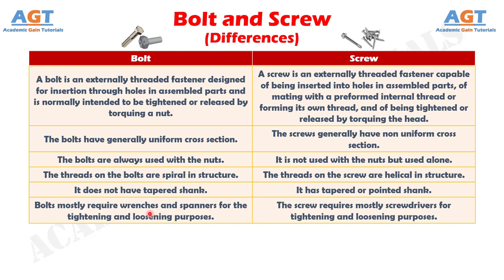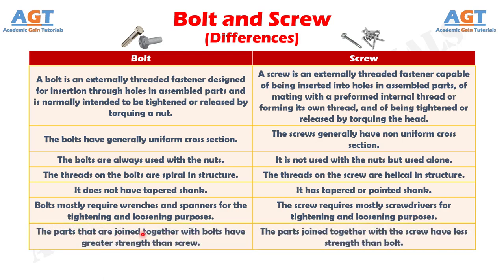Number 6: Bolts mostly require wrenches and spanners for tightening and loosening purposes, whereas screws mostly require screwdrivers for tightening and loosening purposes. Number 7: The parts joined together with bolts have greater strength than screws, whereas the parts joined together with screws have less strength than bolts.